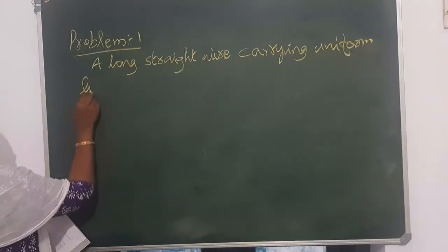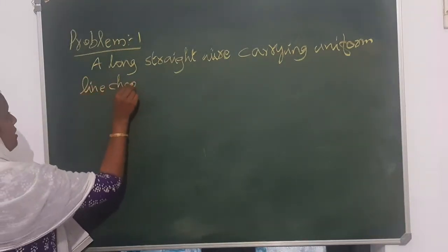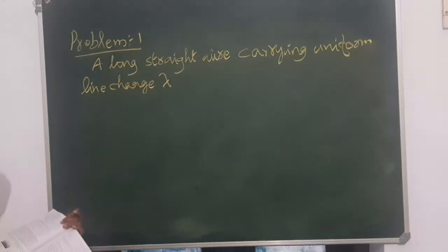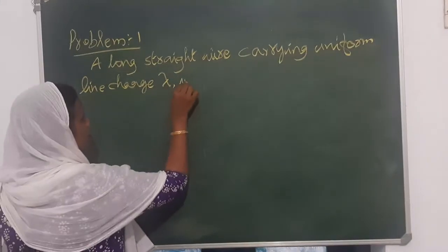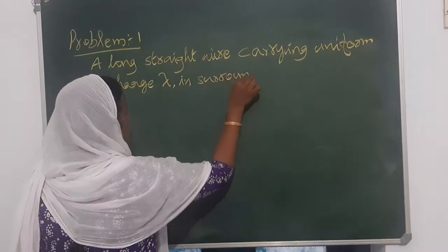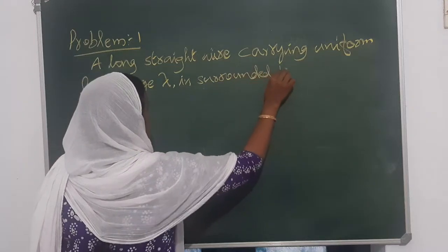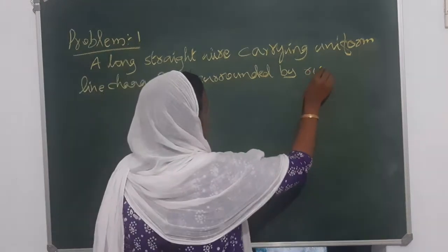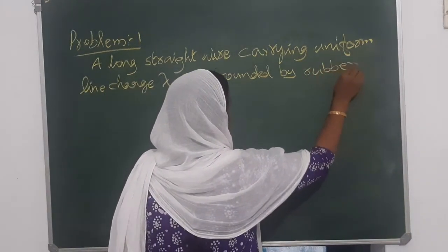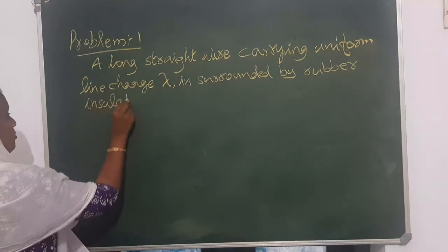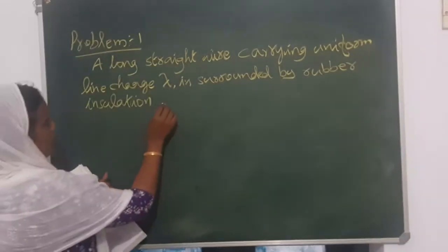Carrying uniform line charge lambda, is surrounded by rubber insulation out to a radius A.